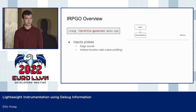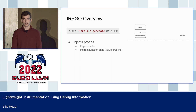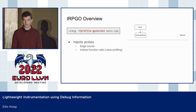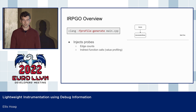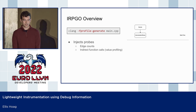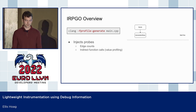LLVM has a few different ways to instrument a binary. We'll be talking about IR-level instrumentation called IRPGO. We start with creating an instrumented binary using the fprofile-generate flag. This will inject probes into LLVM that gather statistics about the behavior of the binary. In particular, it'll track function edge counts for each branch in a function — counting the number of times each branch edge was taken. Fprofile-generate can also track indirect function calls, but this won't be the focus of our talk.